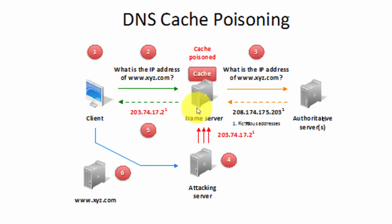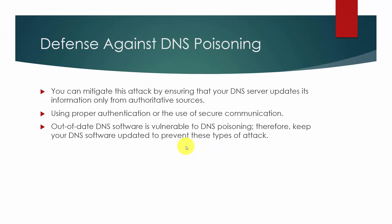Hopefully that gave you a better understanding of how DNS cache poisoning works. For defense against DNS poisoning, you can mitigate this attack by ensuring that your DNS server updates its information only from authoritative sources. Using proper authentication or secure communication will help. Out-of-date DNS software is vulnerable to DNS poisoning, so keep your DNS software updated to prevent these types of attacks.